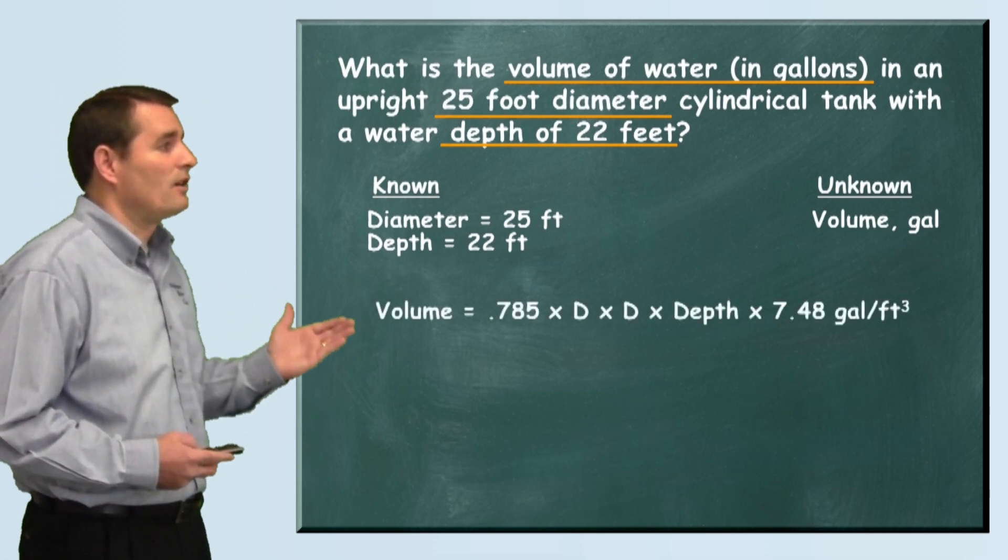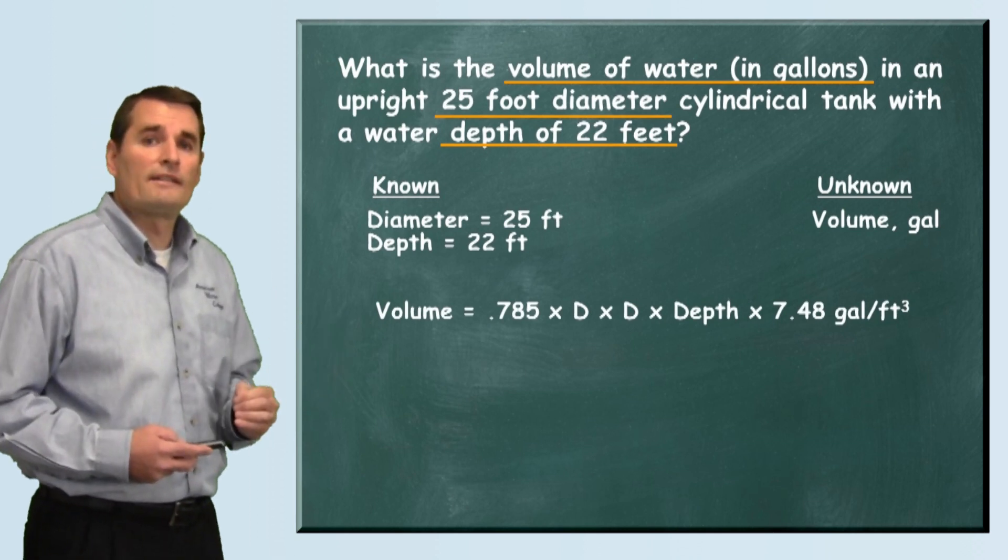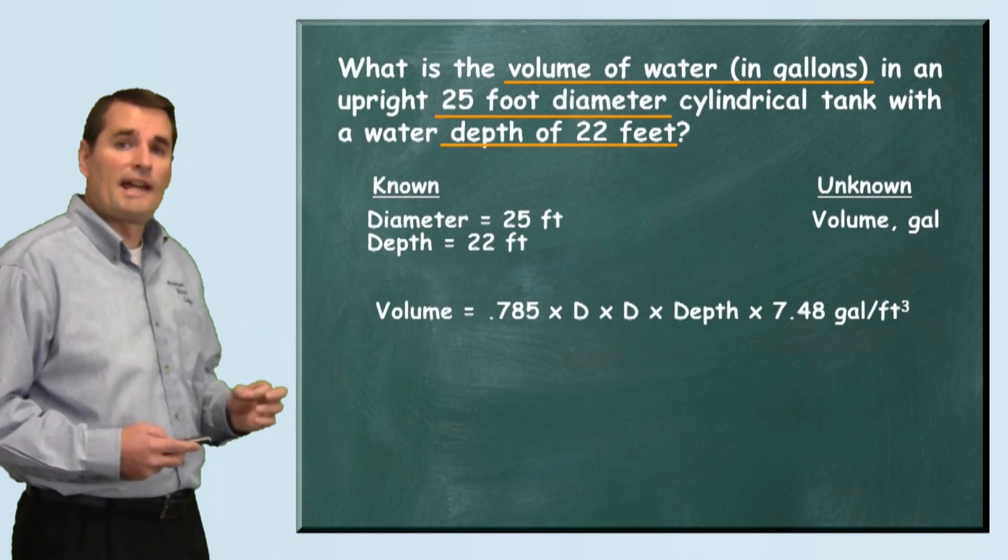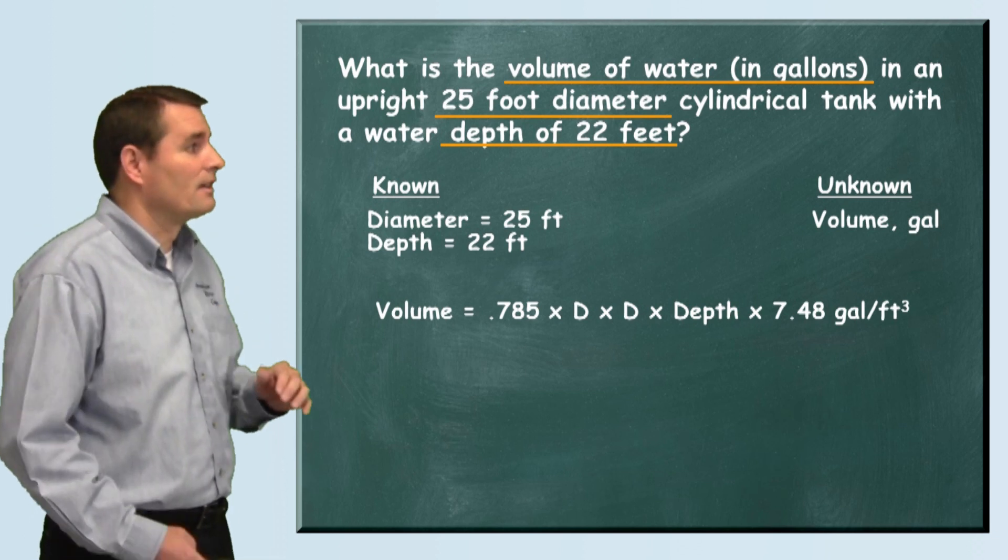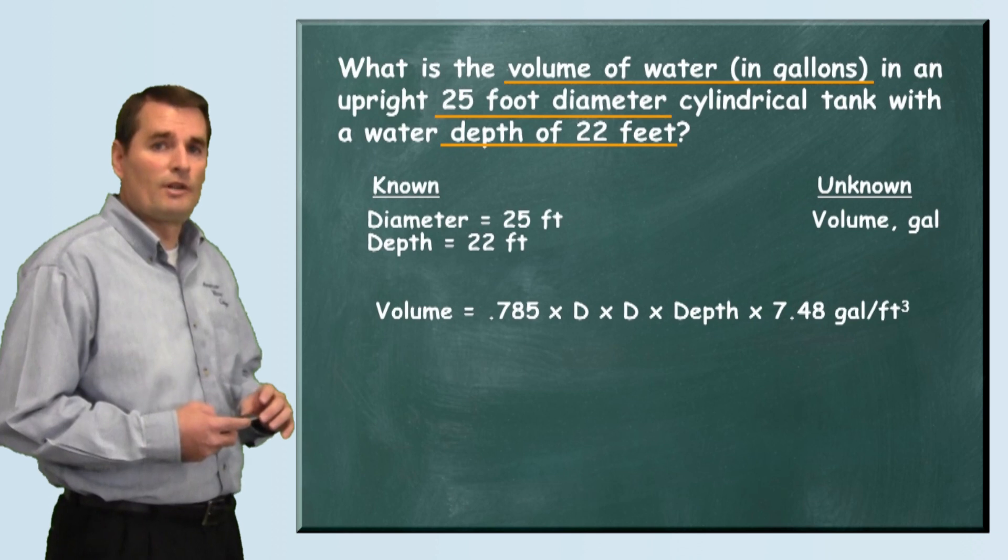We'll use the formula that says volume equals 0.785 times the diameter times the diameter times the depth of the tank times 7.48 gallons per cubic foot.